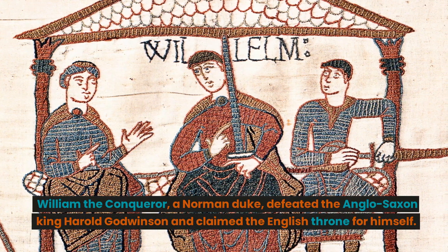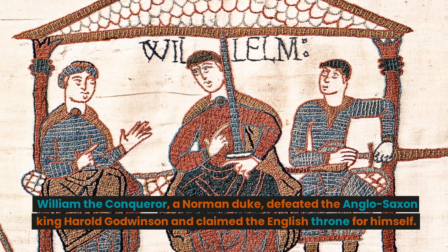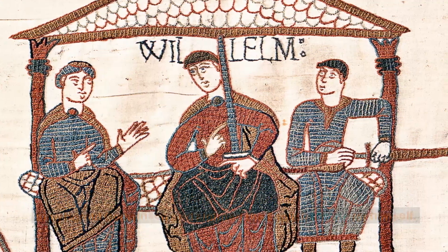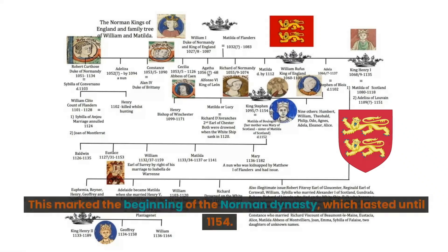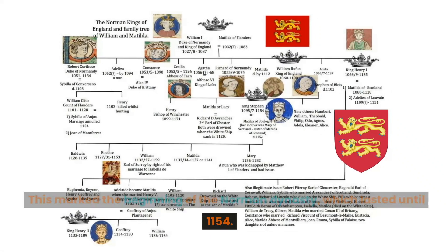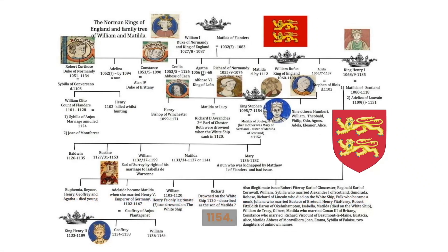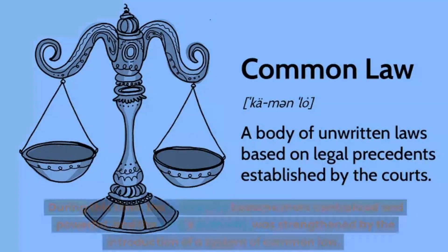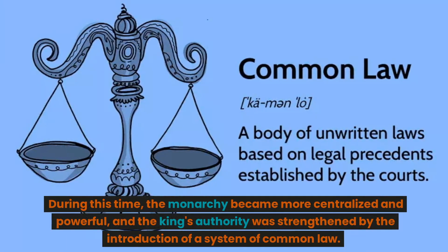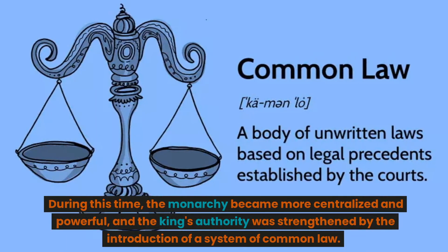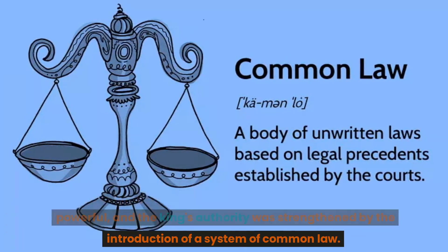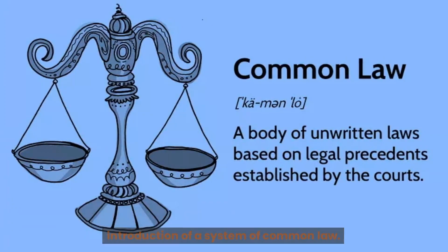defeated the Anglo-Saxon king Harold Godwinson and claimed the English throne for himself. This marked the beginning of the Norman dynasty, which lasted until 1154. During this time, the monarchy became more centralized and powerful, and the king's authority was strengthened by the introduction of a system of common law.